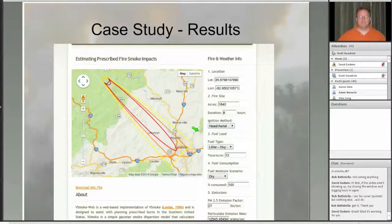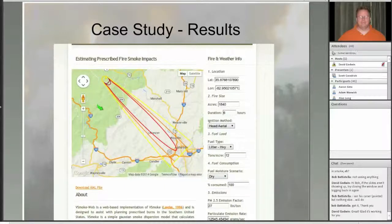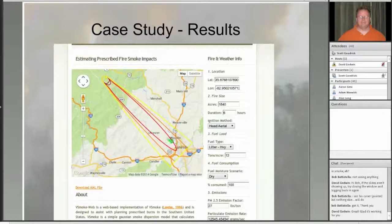Once all the information is entered, you click the run button and within a few seconds — up to about 30 seconds — you get your vSmoke output plume on the map. Based on the information from the Brush Creek burn, the model shows definite unhealthy-for-sensitive-individuals impacts over a large area of Asheville, with even an area of unhealthy concentrations reaching Asheville. Looking at this information, it would have been questionable to go ahead with the burn on that day.